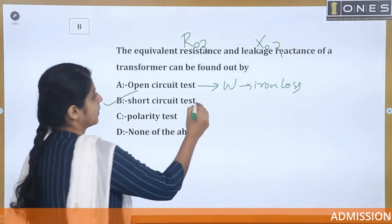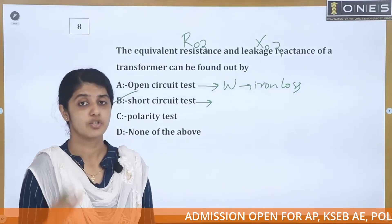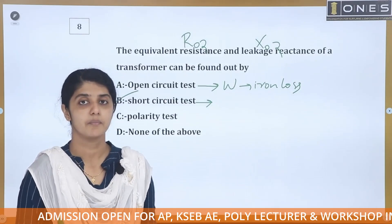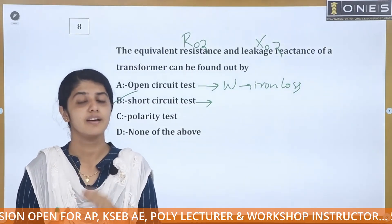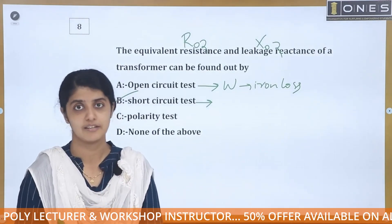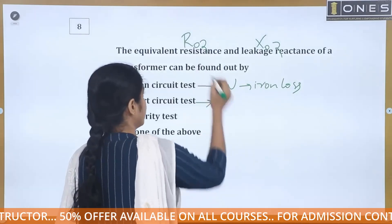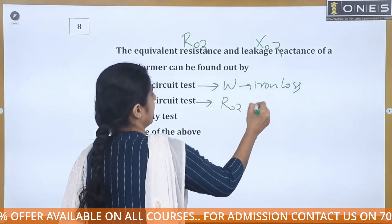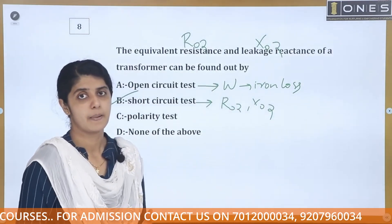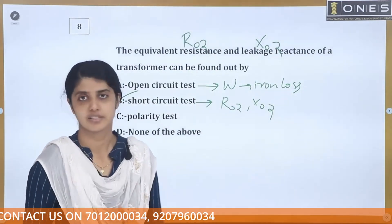Then we come to the short circuit test. We short the low-voltage side and apply voltage to the high-voltage side until rated current flows. We record the rated copper loss and then calculate R02 and X02.